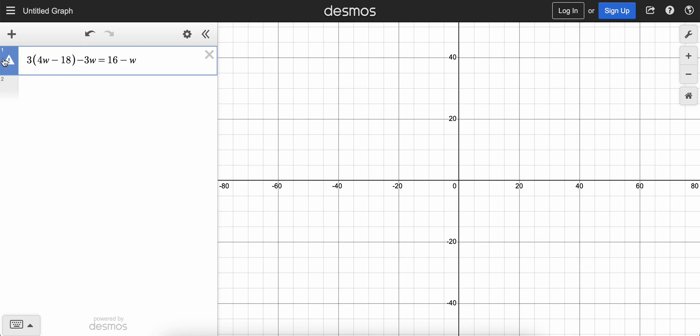Now notice what happens. Desmos doesn't like this because it needs to be either x or y. So that's easy. We can just change out every w for an x. Let's erase the w's and replace them with x's, and there you have it. It's fine with that. And the solution to this equation is 7.